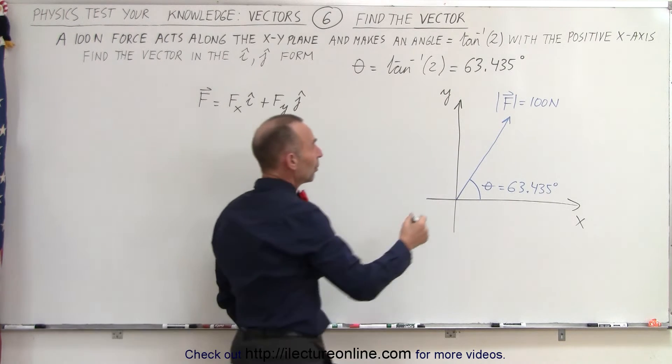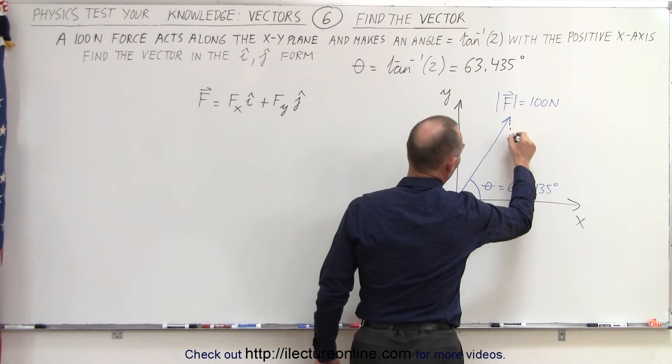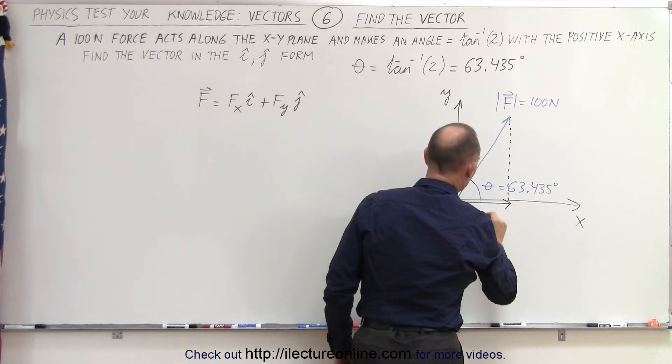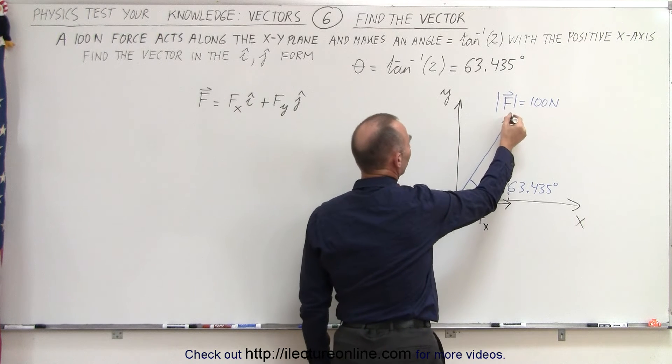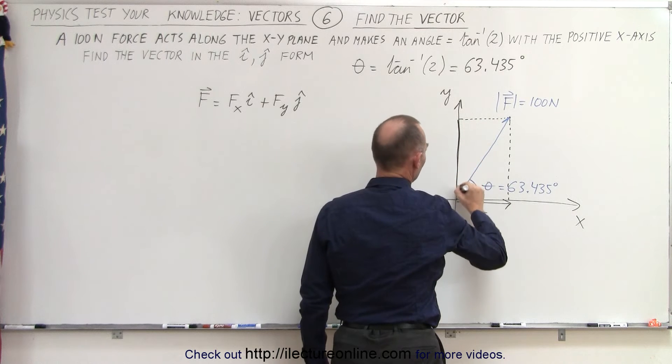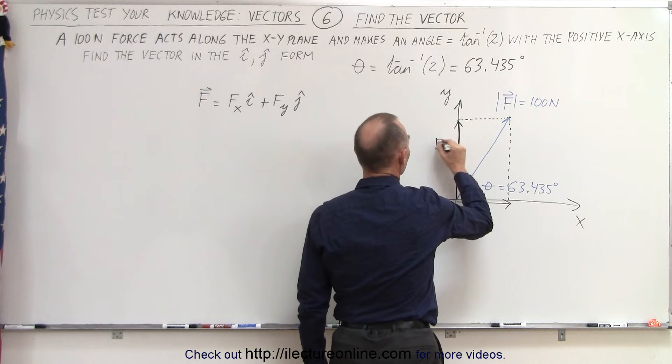Well, to find the X components, we project the vector onto the X-axis. So we can see that this here would be the X component, F sub X. And to find the Y component, we project the vector onto the Y-axis, which means that this here, we get the F sub Y.